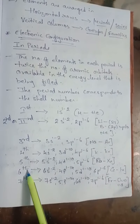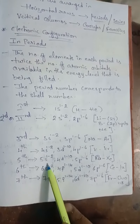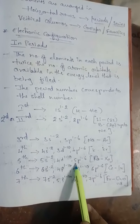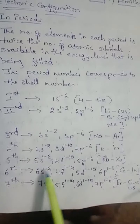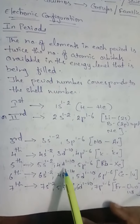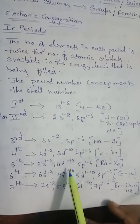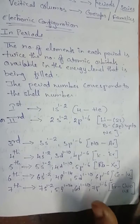The fifth period begins with rubidium, filling up of the 5s orbital. The electronic configuration is 5s1-2, 4d1-10, 5p1-6. The 4d subshell is filled starting at yttrium and up to cadmium. The period ends at xenon with the filling up of 5p orbital. Thus the fifth period also has 18 elements.